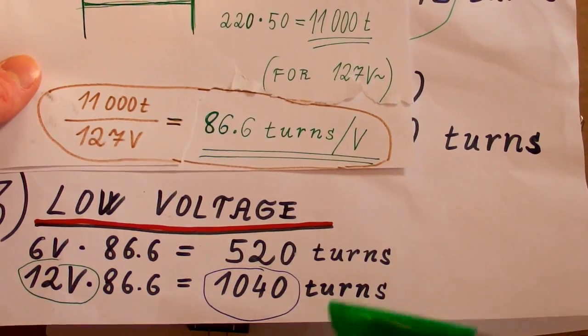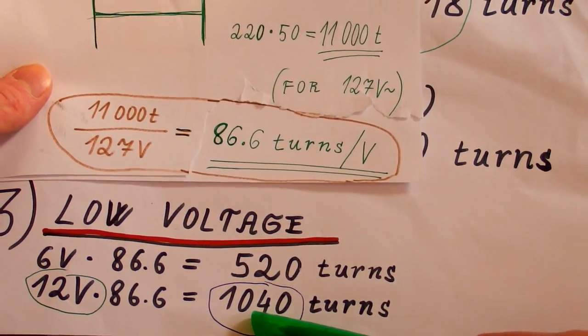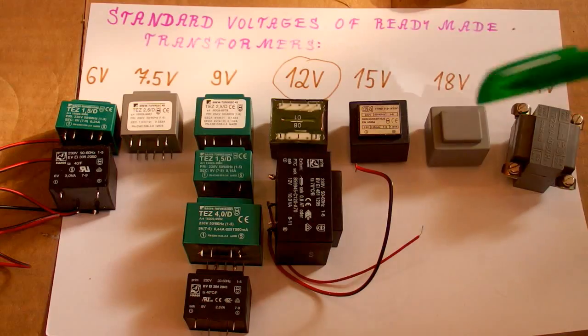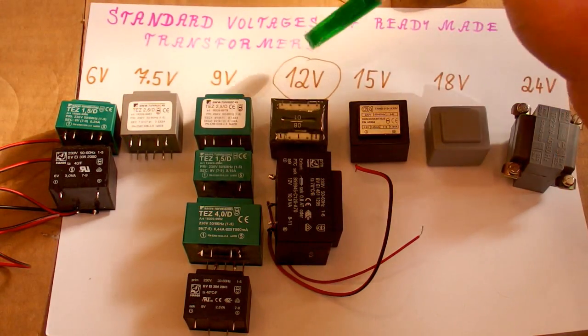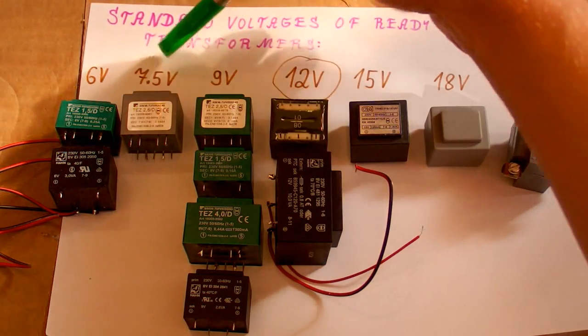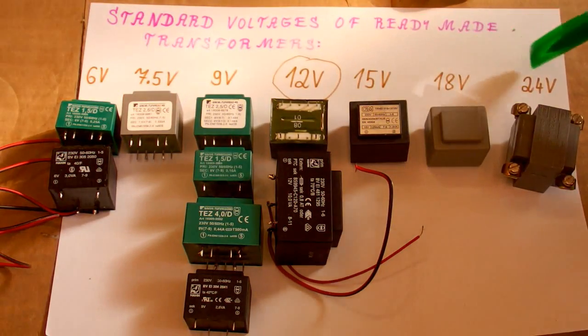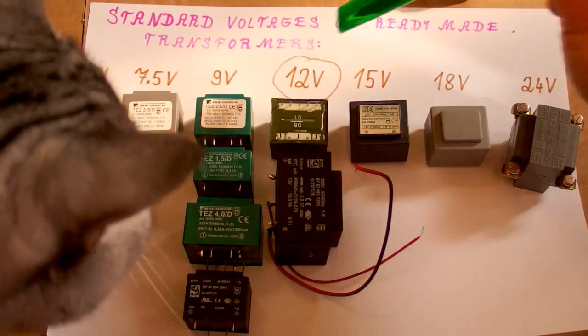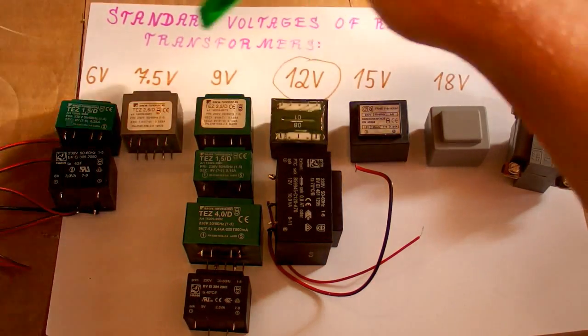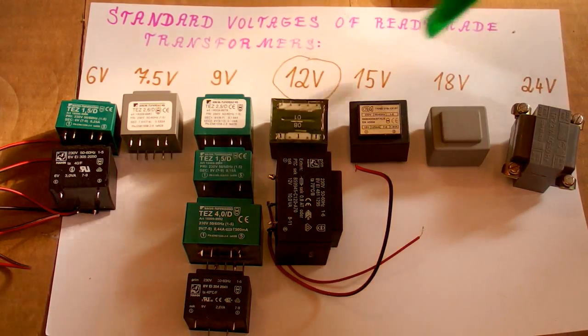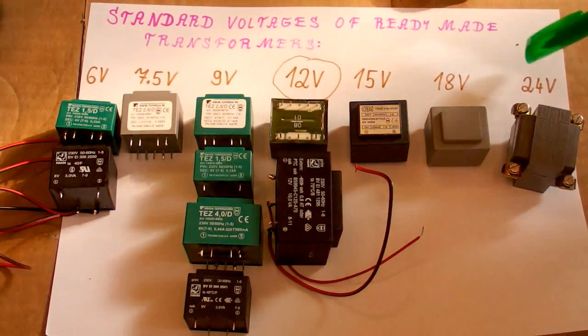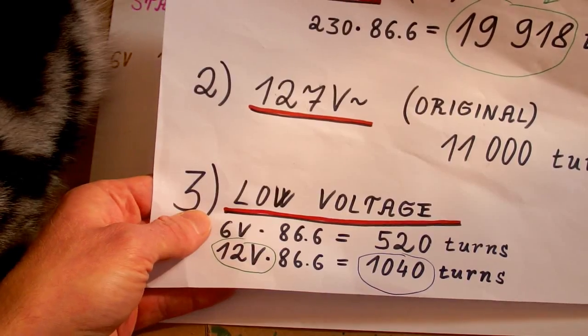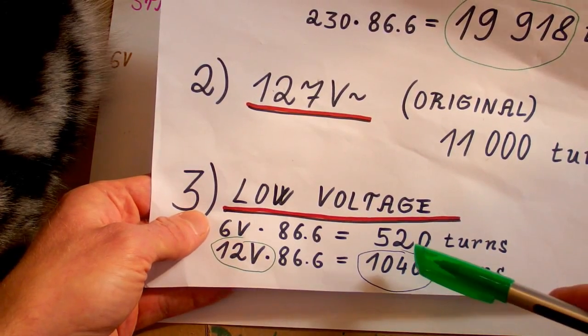So I'll put 1040 turns on it, and if my guesstimate wasn't right and it doesn't work at 12 volts, I can just use another transformer with either lower or higher voltage. Using voltage in the middle of the range allows me to adjust down or up from half to double of it.